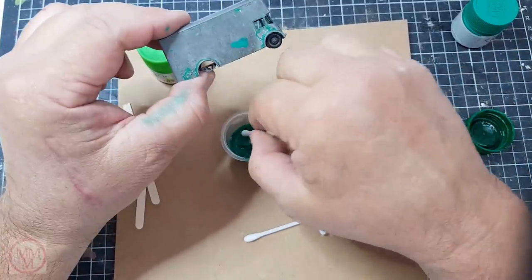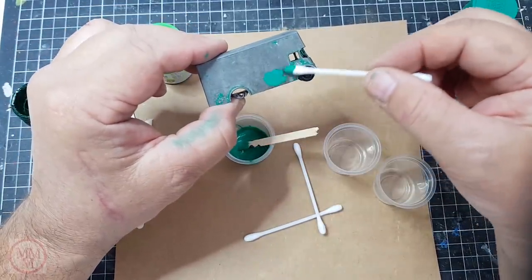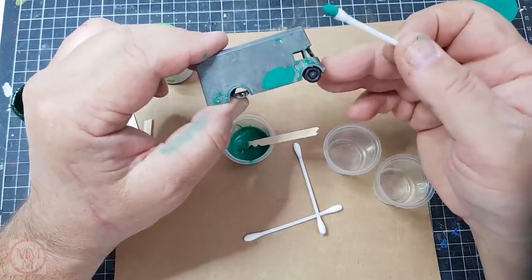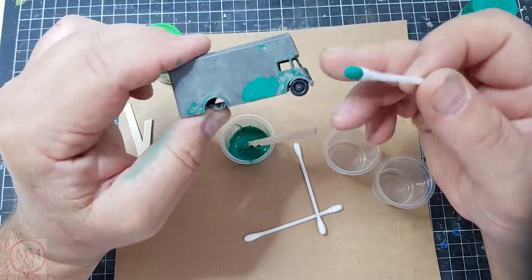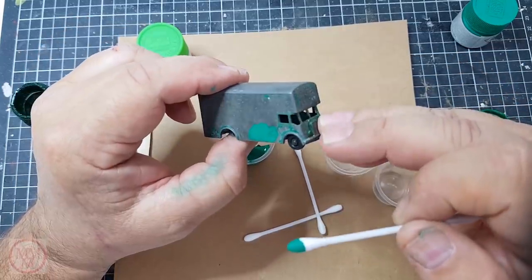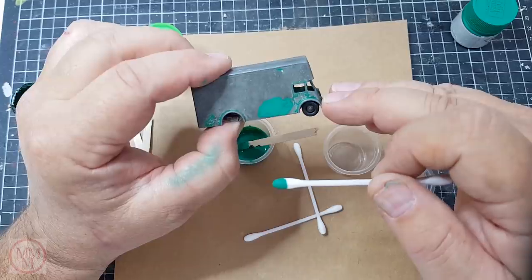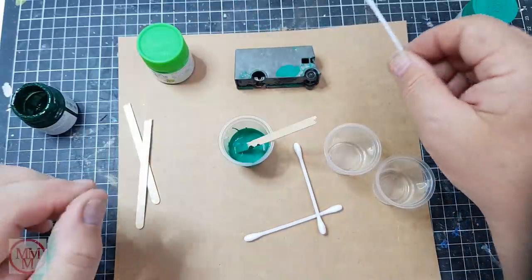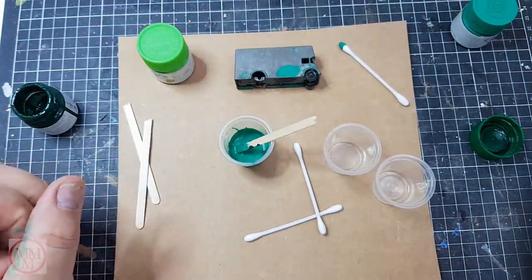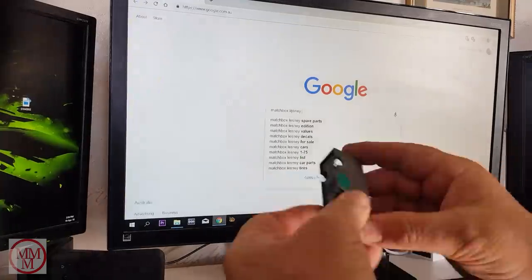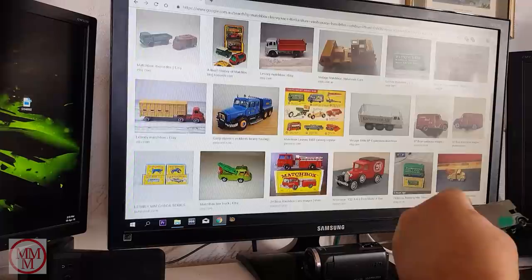Using this little cotton bud here, I'm just spreading a little bit of paint on the body and trying to compare it with the remnants of the original paint that are still on the body. Part of me suspects that this vehicle has been painted darker green by somebody else before me. I'm going to go and check on the internet now to see if there's any other reference material I can source to find out what color this should be.